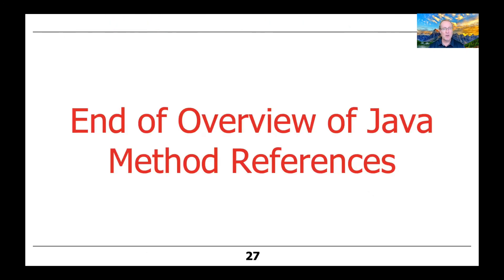So that's the end of our overview of method references in Java — a very powerful and very concise feature. I love to use method references wherever I can, because it makes the code much more readable: certainly more readable than using an anonymous inner class, but generally also more readable than using a lambda expression. Get to learn how to use method references and apply them whenever you can.